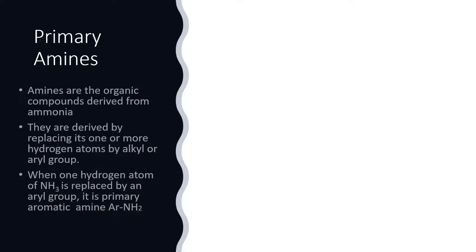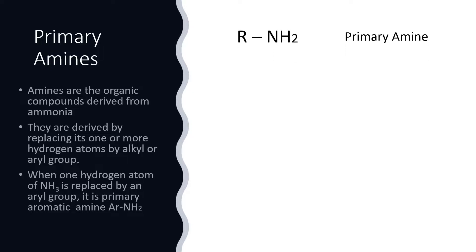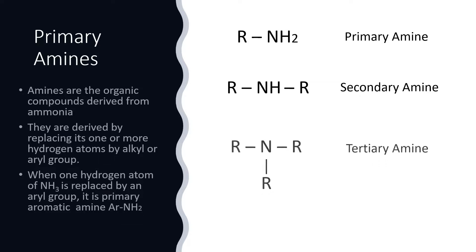Let's first see what amines are. Amines are organic compounds derived from ammonia. They are derived by replacing one or more hydrogen atoms by an alkyl or aryl group. If one hydrogen is replaced by an alkyl group we call it a primary amine; if two hydrogen atoms are replaced we call it a secondary amine; and if three hydrogens are replaced we call it a tertiary amine.